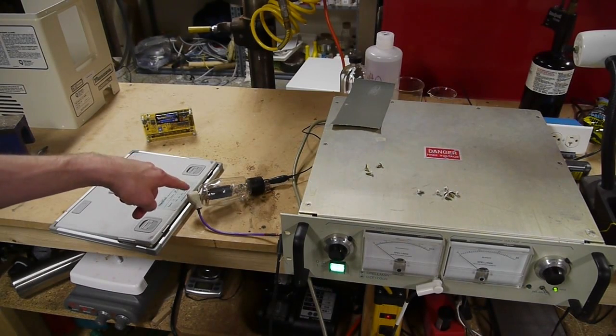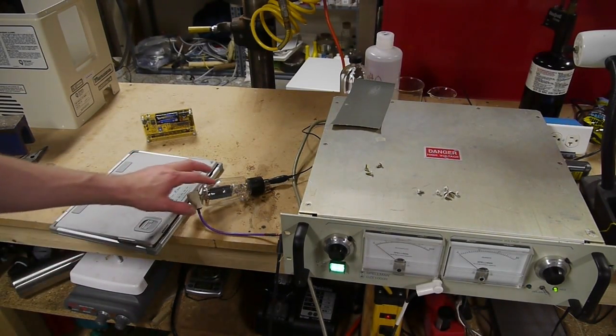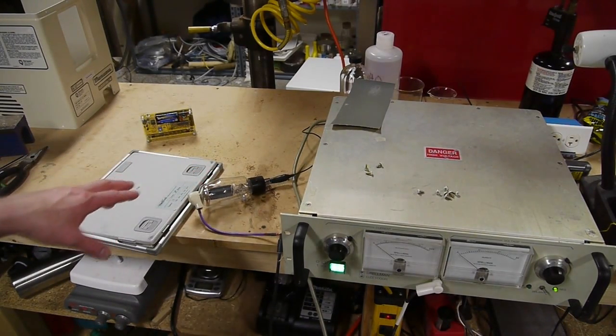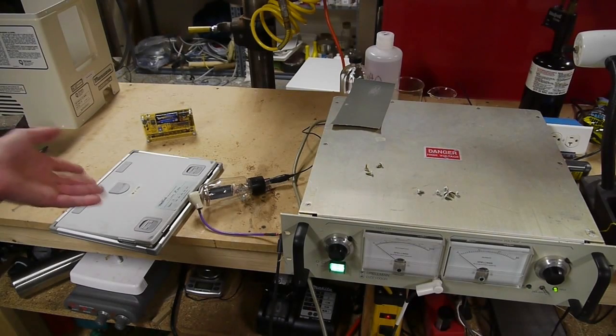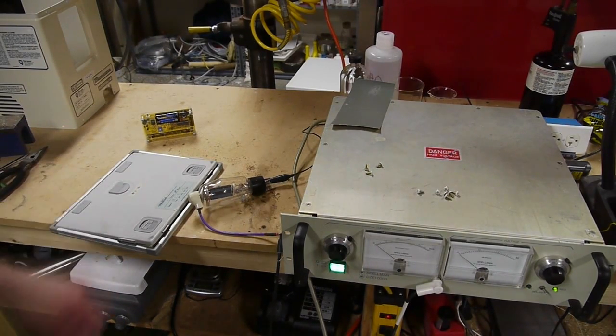So the problem with turning on the filament, using a filament voltage of 3 to 6 volts to heat up the filament the way this vacuum tube was intended to be used, is that the tube will conduct so much current that we can't get the voltage high enough to produce X-rays.